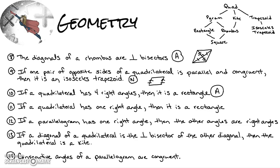Number eleven: if a quadrilateral has one right angle, then it is a rectangle. That would be sometimes true — it could be a rectangle if all the other angles are also right angles, but it could also be a trapezoid. I showed earlier a trapezoid where two angles are 90 degrees, so that's why this is only sometimes true.